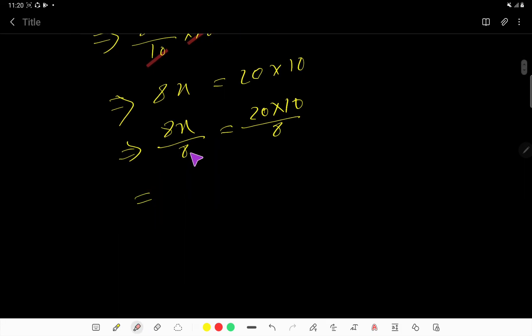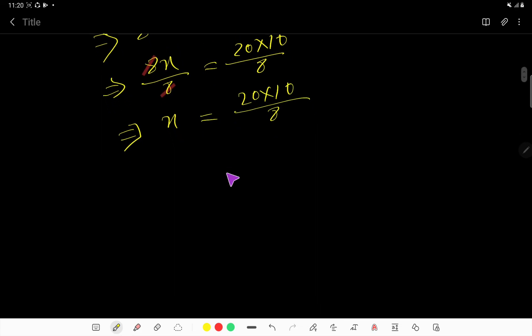Okay, so cancel 8, 8. You are getting X equal to this, right? So now let me reduce this fraction. If you divide this 8 by 2, then you will get 4, and if you divide this 10 by 2